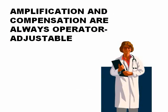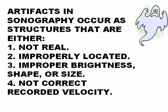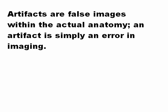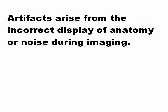Amplification and compensation are always operator adjustable, though some machines have some automatic compensation built in. What are artifacts? Artifacts are things that are not real or are not in the correct position — they have incorrect brightness, shape, or size, and in the case of Doppler, incorrect recorded velocity. Remember, Doppler is used to record velocity. An artifact is something that is not real, not accurate. Artifacts are false images within the actual anatomy — a simple error in the image. Artifacts arise from incorrect display of anatomy or noise during imaging.